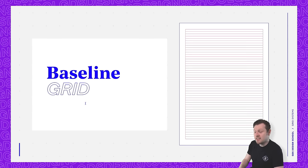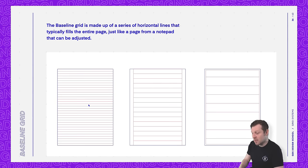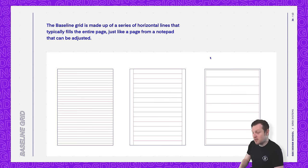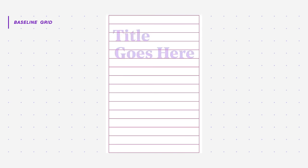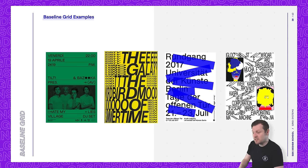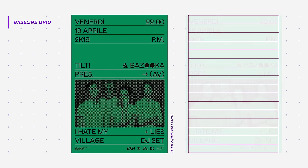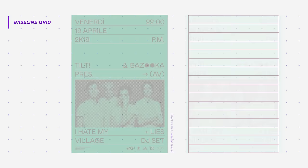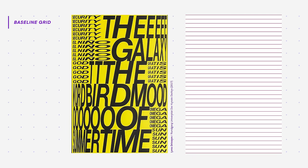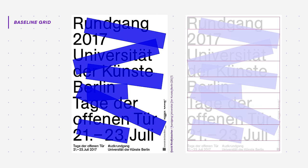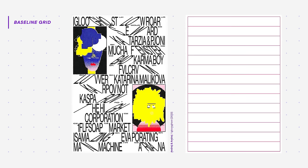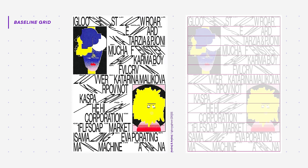Another common grid used in design is the baseline grid. The baseline grid is made up of a series of horizontal lines that typically fills the entire page, just like a page from a notepad. The baseline grid is not commonly used to structure or align image content, but more so to manage type and define lines where type can sit. Baseline grids are great to achieve consistency with type, creating a vertical rhythm throughout the document. They are common in magazine and brochure design, but can also be used in poster design with lots of type elements.